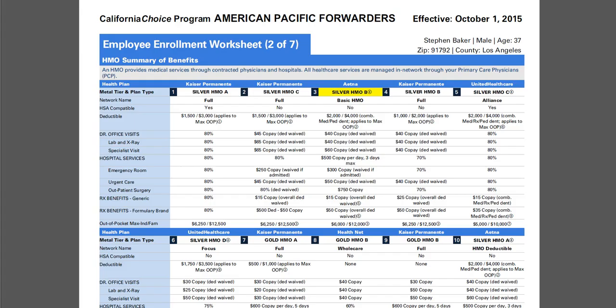The next page gives a synopsis of the HMO plans, and again it highlights the plan the employer is basing their contribution on. It's important to understand that the network this plan utilizes is the Aetna basic HMO network, so you want to make sure that if you're going to choose this plan, your particular doctor or provider is on this plan. It also indicates whether the plan is HSA compatible — in this case, this particular plan is not HSA compatible.